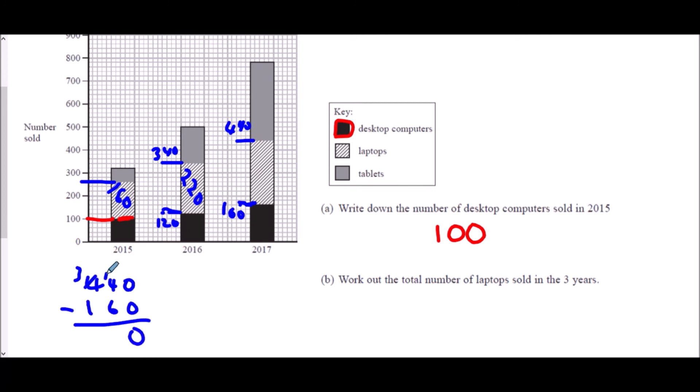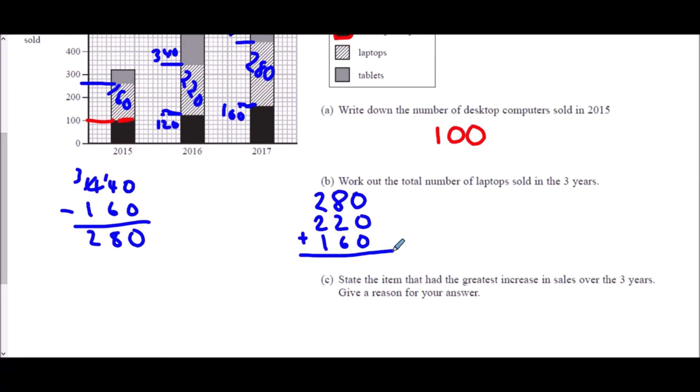But it wanted the total for the three years and so 280, 220 and 160 all need adding together. And if we do that we get 8 plus 2 plus 6 is 16. So 1, 3, 5, 6. We had 660 laptops sold in the three years.